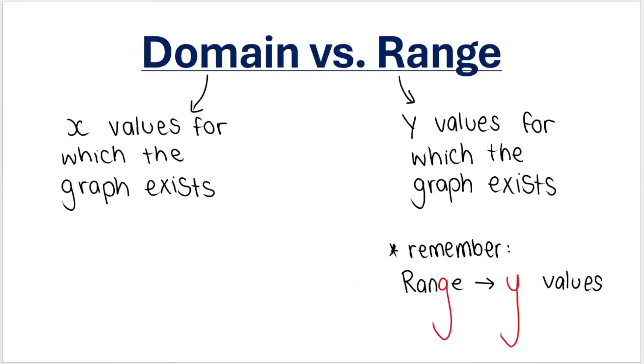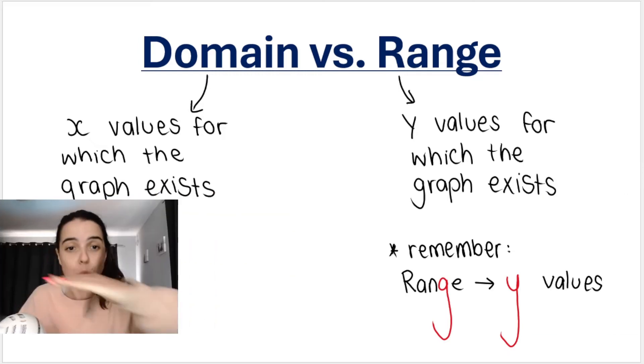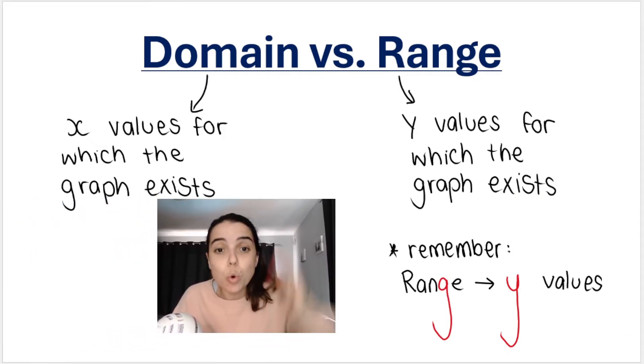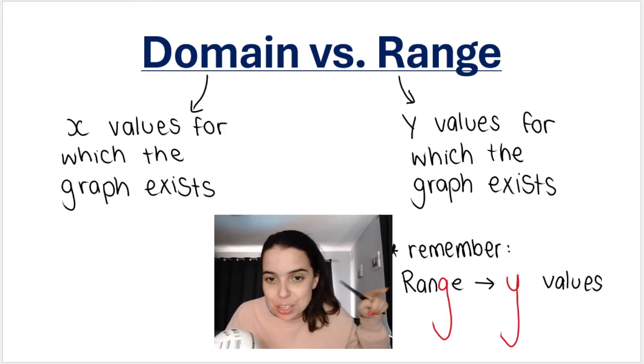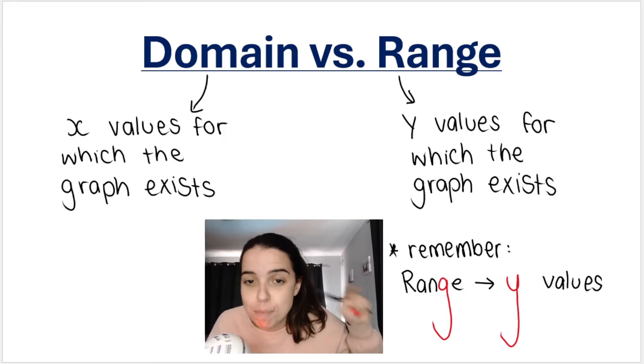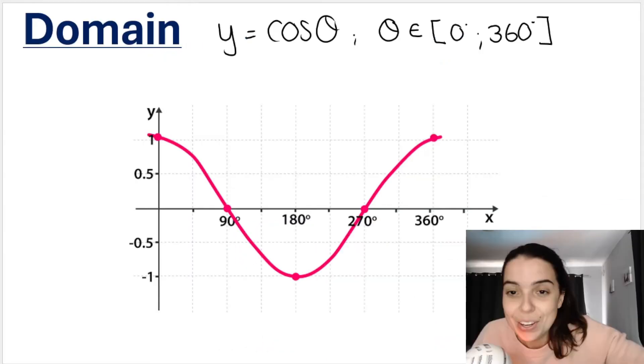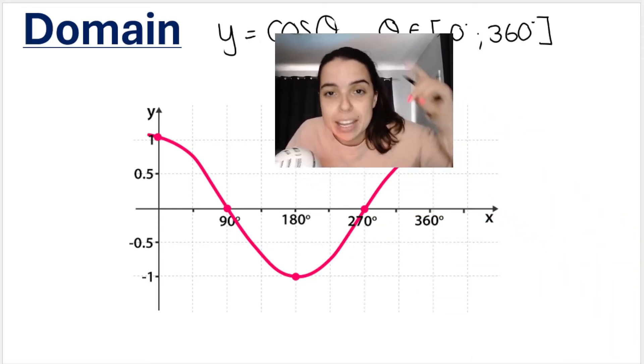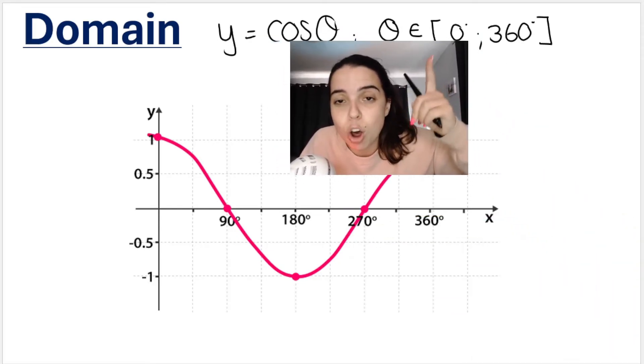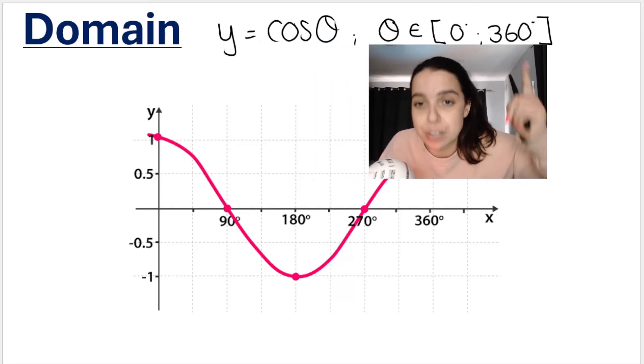Now back to domain versus range. We've already been speaking about domain, but remember domain or your x values, range or your y values. And I've shown you this in a previous video, but this is how I remember the difference between domain and range: range, y values. So for this graph, just like the one I plotted earlier, my domain is theta is an element of 0 to 360.